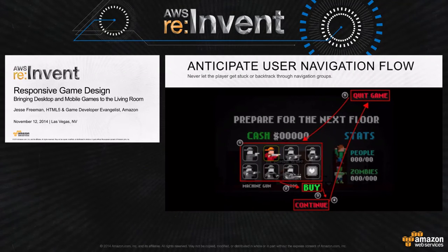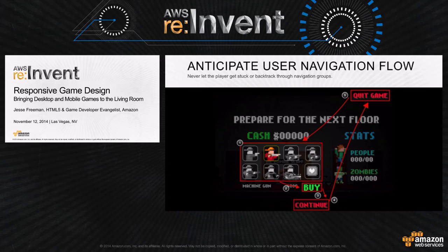Another important thing is anticipating user navigation flow. Here's a store UI from one of my games — at the end of a level, you can purchase new weapons. There's a lot going on, and I need to simplify it for remote or game controller input. When you arrive, focus lands on the items panel. Hit left or right to cycle through weapons, down to go to Buy, down again to Continue, and down again to reach Quit — which loops back to the store. This circular motion means players are never lost in the UI and can always move forward.